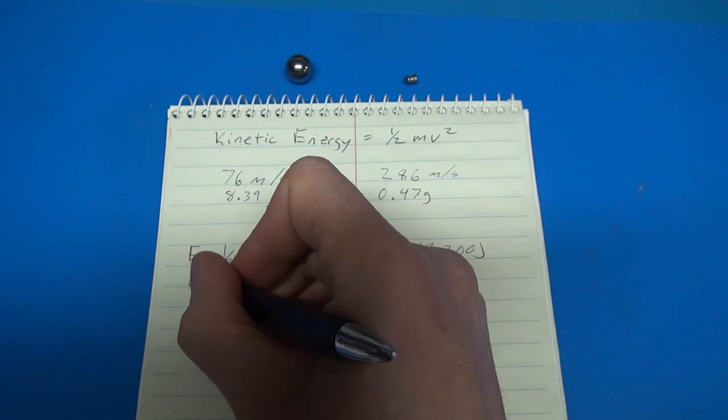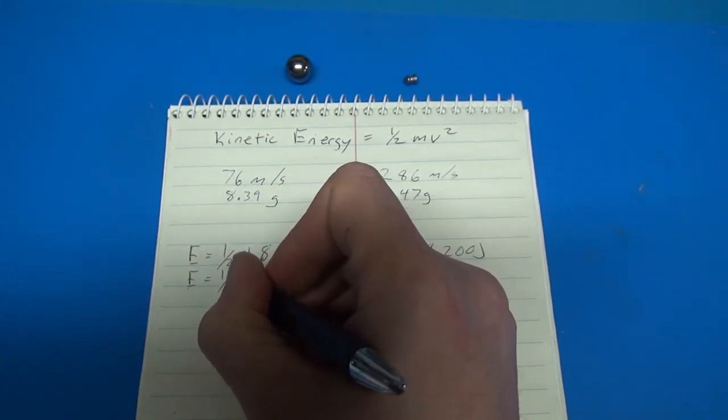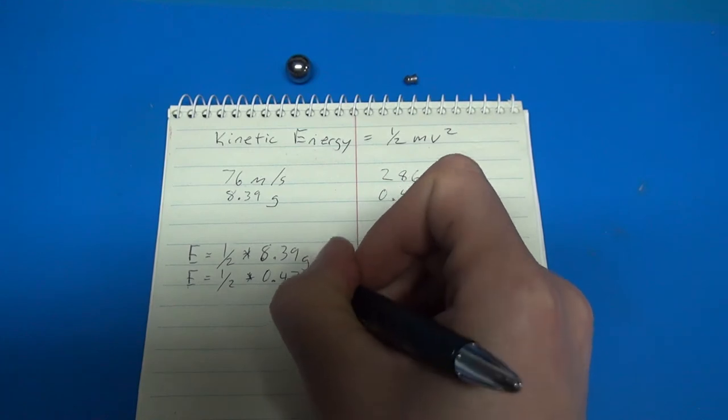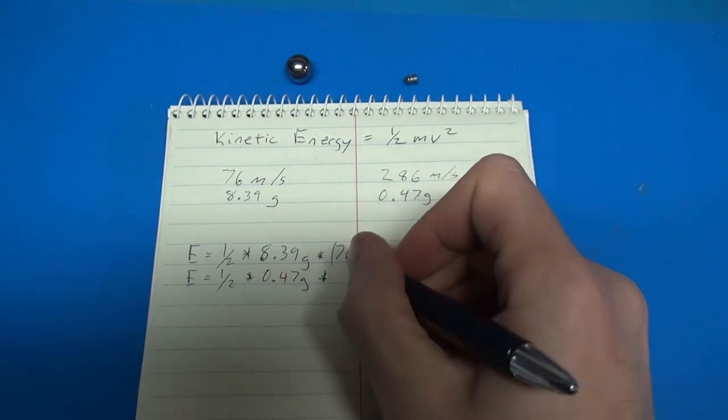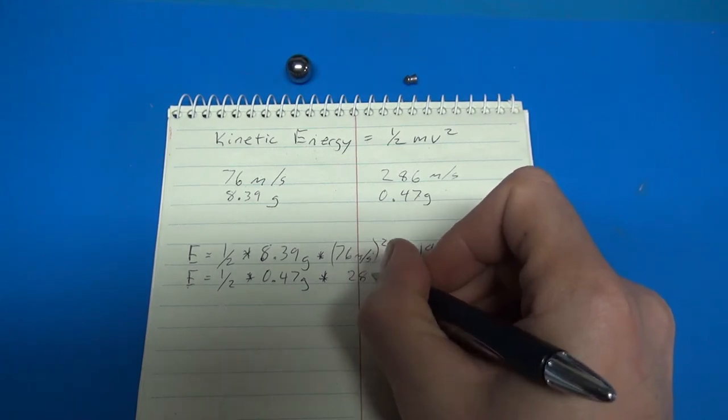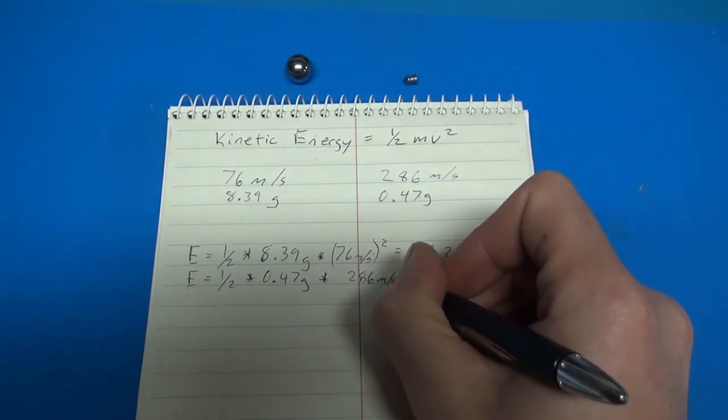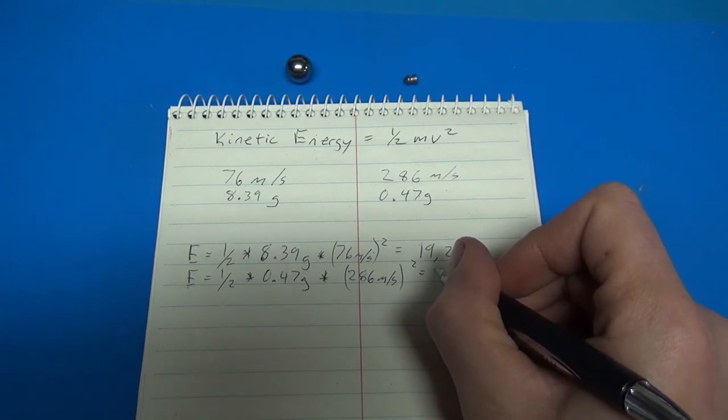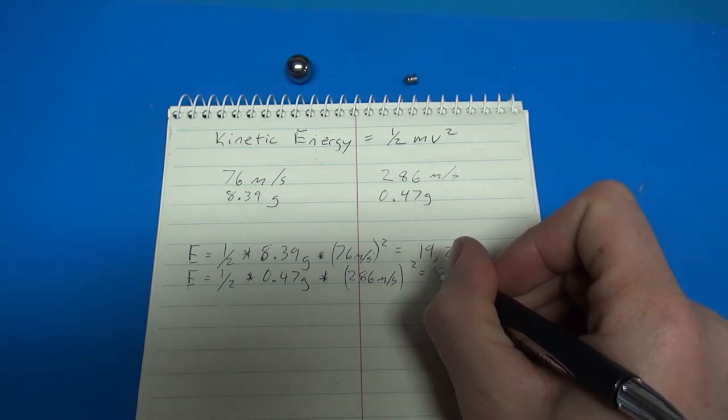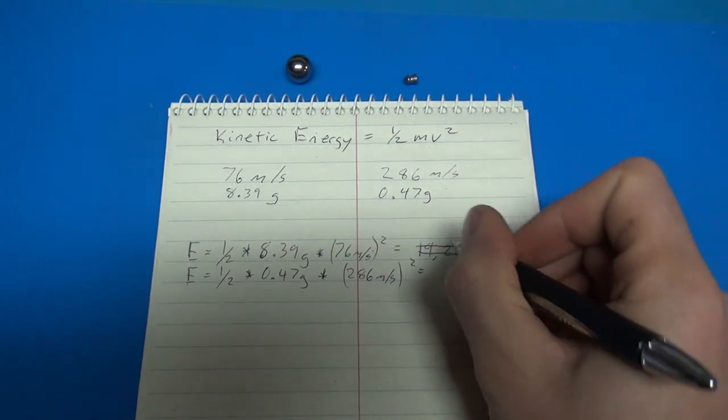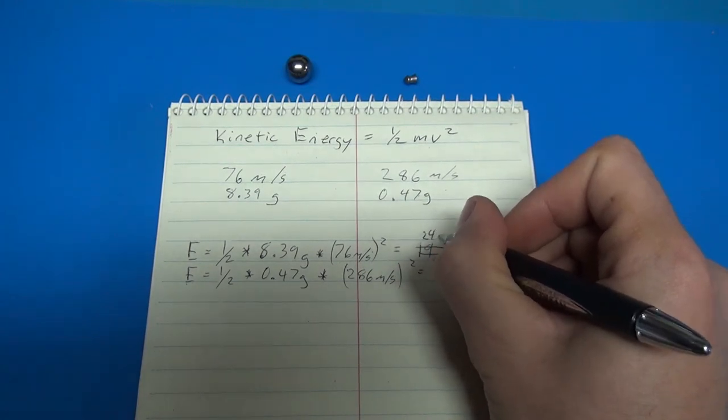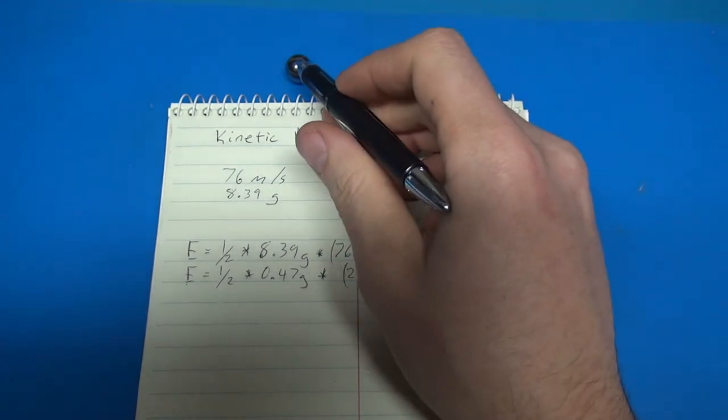And the energy for the air pellet is going to be one-half times a much smaller mass of 0.47 grams. And we'll multiply that by 286 meters per second. And we'll square him, and I did the calculations for this. And it turns out to be... Whoops. Okay, so I had the calculations all written down here, so I misplaced that. So basically, this one, if you do this on your calculator, you'll get 24,200 for the ball bearing.